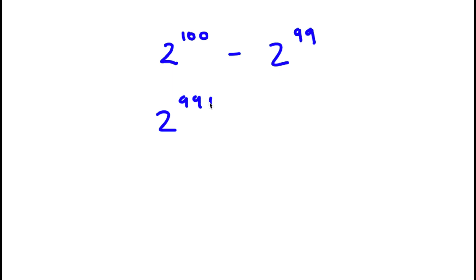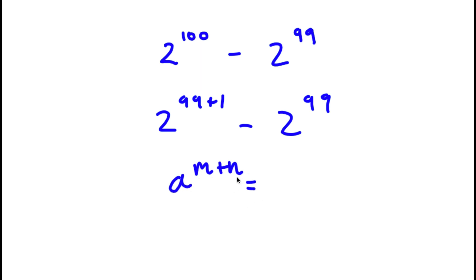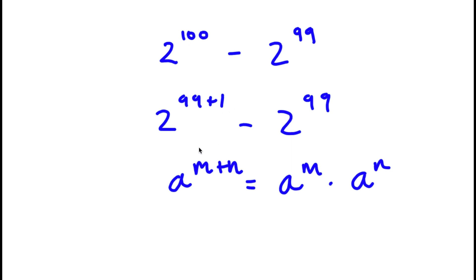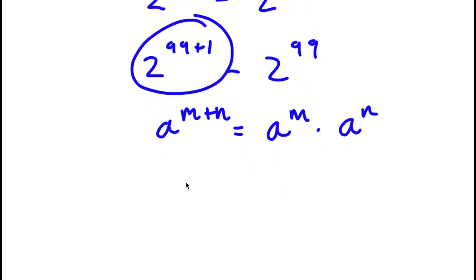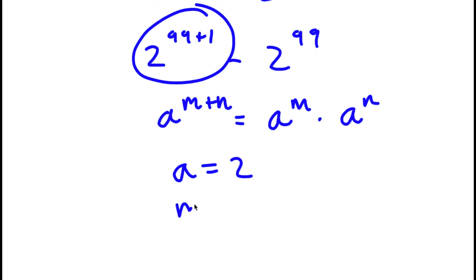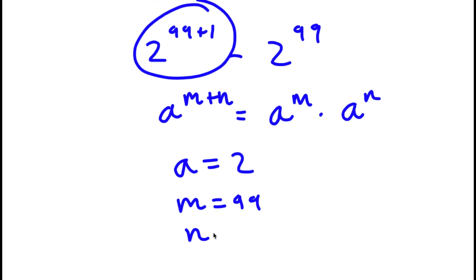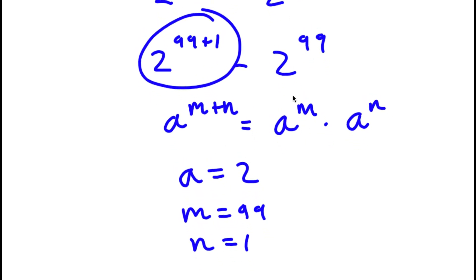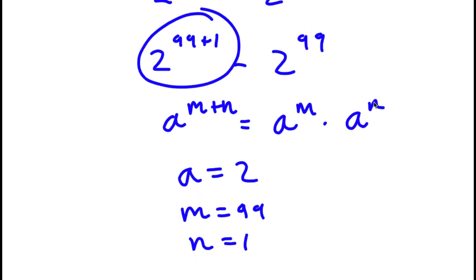So now I have 2 to the power of 99 plus 1 minus 2 to the power of 99. Now, if I have something in the form a to the power of m plus n, this is simply equal to a to the power of m times a to the power of n. So in this case, a to the power of m plus n — we have 2 to the power of 99 plus 1, we think of a as 2, m as 99, and n as 1. So now I'm going to put this in the form a to the power of m times a to the power of n.